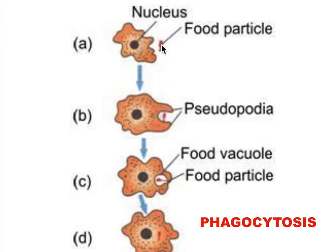If the food particle is a solid particle which is internalized, the process is called phagocytosis. But if it is a small liquid molecule or ions, then it is called pinocytosis.